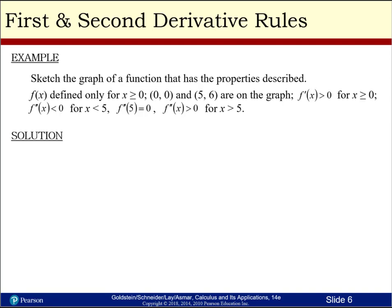Sketch the graph of a function with these properties: f of x is defined for x greater than zero, meaning we only have the right-hand side of the graph. The points zero, zero and five, six are on the graph. The slope is positive, so it's increasing for x greater than zero. The second derivative is less than zero — concave down — as long as x is less than five. The second derivative at x equals five equals zero, which is a point of inflection. Then the second derivative is positive, so we have concave up for x greater than five.